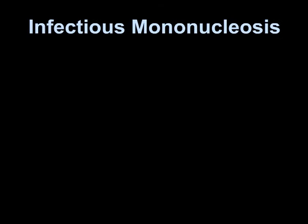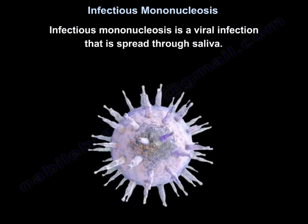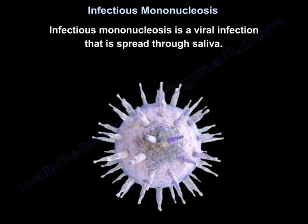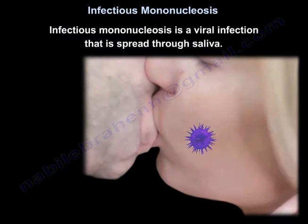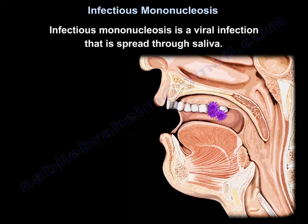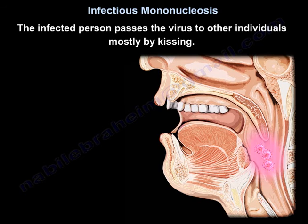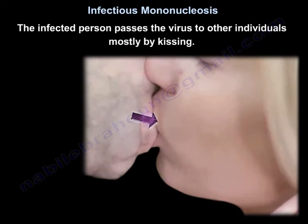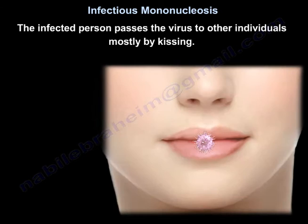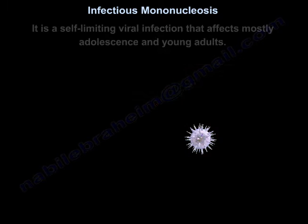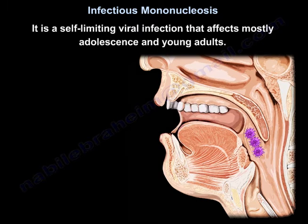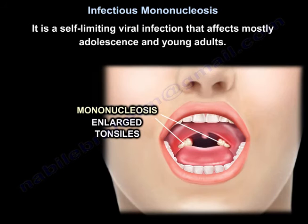Infectious Mononucleosis is a viral infection that is spread through saliva. The infected person passes the virus to other individuals, mostly by kissing. It is a self-limiting viral infection that affects mostly adolescents and young adults.